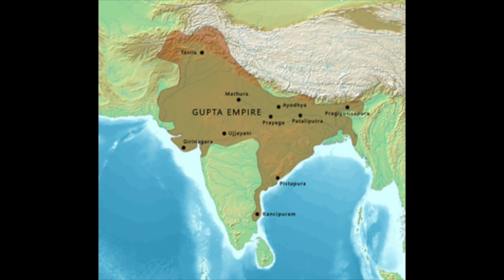They also developed the idea that the earth was a sphere and spun on an axis — which, spoiler alert, turned out to be correct — and the idea that the planets' and moon's luminosity was a reflection of the sun's, rather than their own light. Many Hindu scriptures and pieces of literature, such as the Mahabharata, the Ramayana, and the Kama Sutra, were also written during this time.